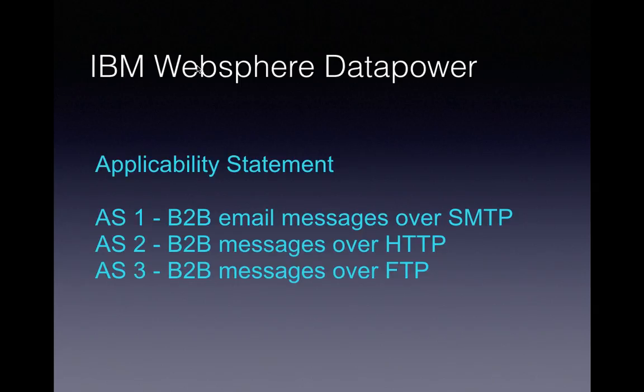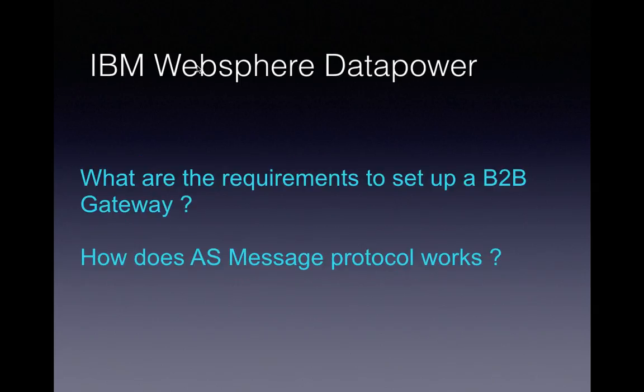We saw about Applicability Statement in the previous slide. AS1 means sending your B2B messages through email using SMTP. AS2 is a separate protocol for sending B2B messages over HTTP. AS3 is for sending your B2B messages over FTP.